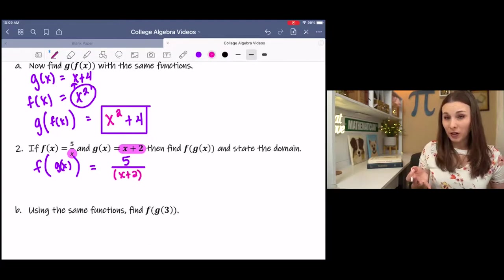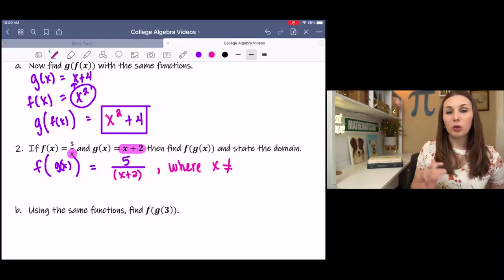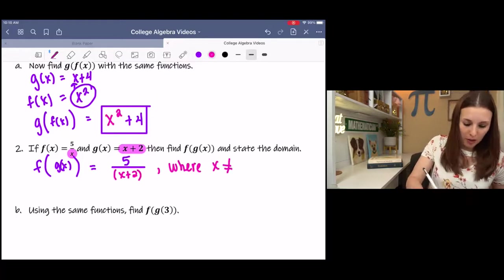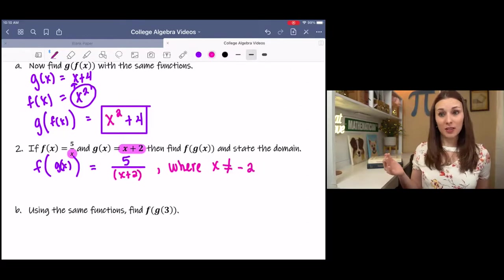So that is 5 over g of x, which is x plus 2. Then there's not really any simplifying we can do here, but we can state our excluded value. x cannot equal... So which value of x would make the function undefined? It's where the denominator equals 0. So you would minus 2 to solve for x, and that would be the x value that makes the denominator 0. And that's it.